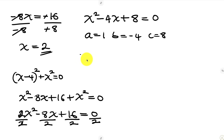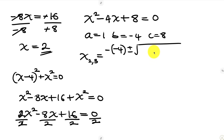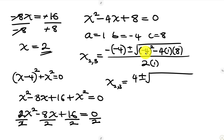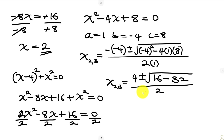Using the quadratic formula, x equals minus b plus or minus the square root of b squared minus 4ac, all over 2a. Substituting: x equals 4 plus or minus the square root of negative 4 squared minus 4 times 1 times 8, all over 2 times 1. That gives us 4 plus or minus the square root of 16 minus 32, all over 2.